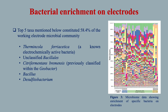The results from microbiome data analysis show bacterial enrichment on electrodes. The top 5 taxa mentioned constitute more than half of the working electrode microbial community. They are Thermicola ferriacetica, which is a known electrochemically active bacteria, unclassified Bacillus, Citreformandus breamensis, Bacillus, and Desulfatobacterium.